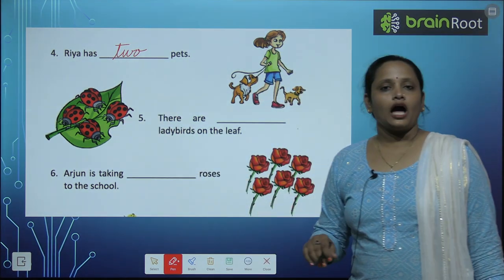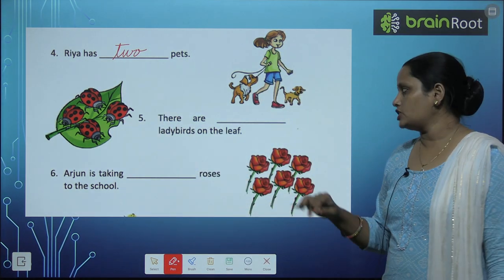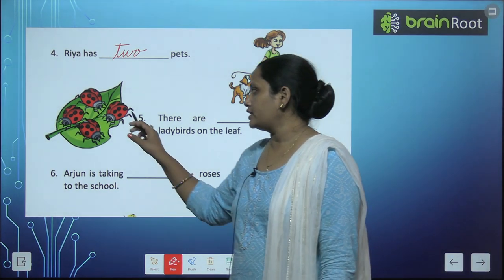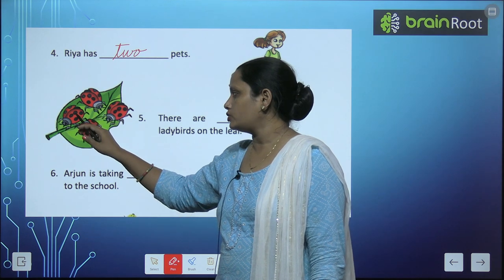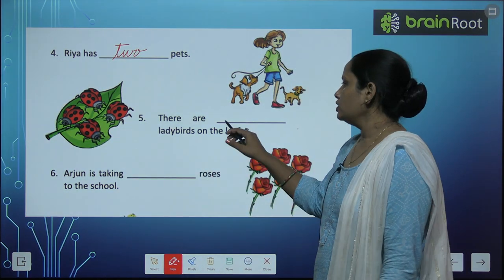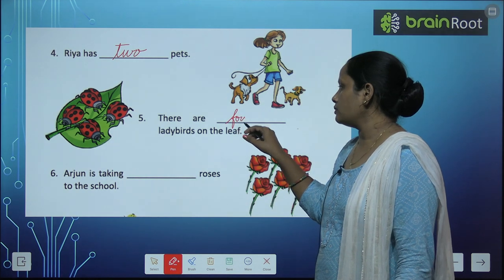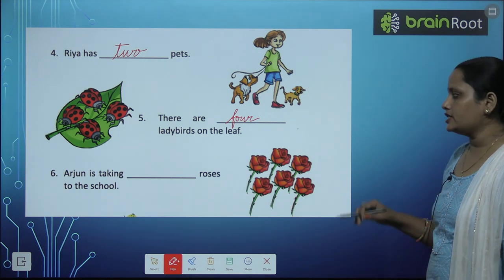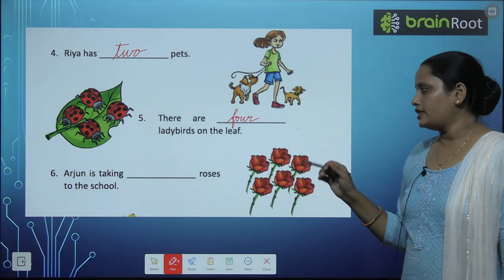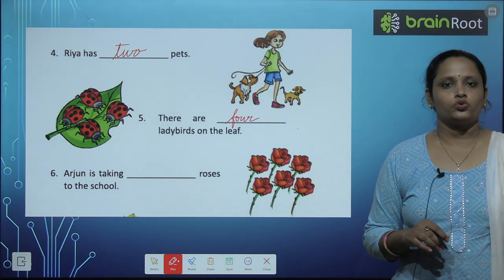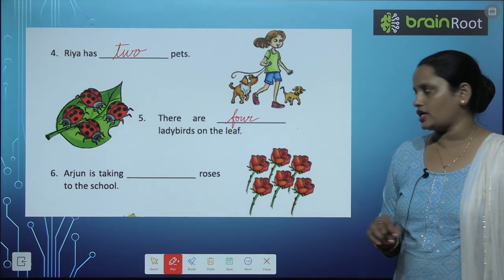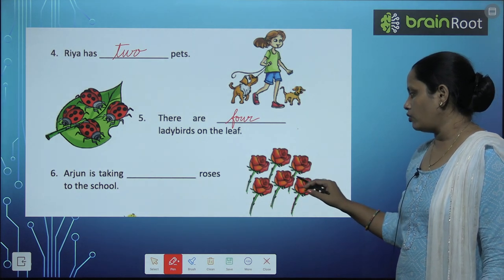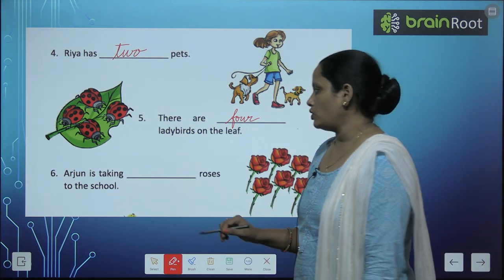There are blank ladybirds on the leaf. Let's count how many ladybirds are on the leaf — one, two, three, four. So there are four ladybirds. Next, Arjun is taking blank roses to school. Let's count — one, two, three, four, five, six. So Arjun is carrying six roses to school.